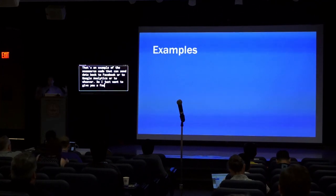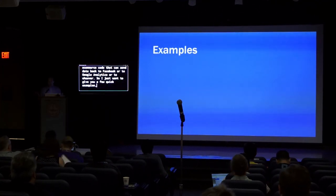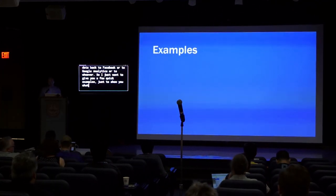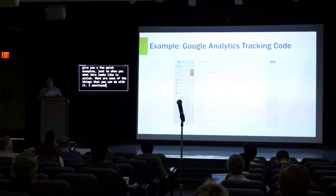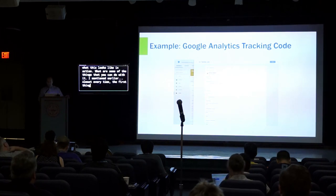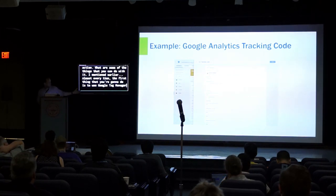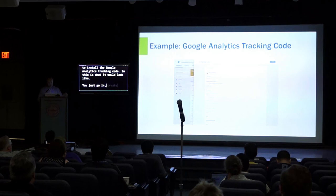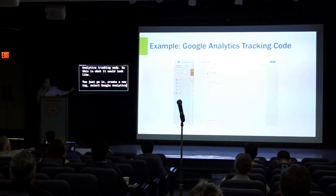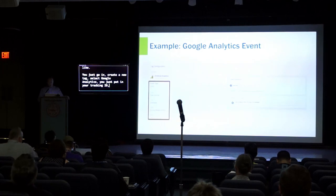I just want to give you a few quick examples to show you what this looks like in action. Almost every time, the first thing you're going to do is use Google Tag Manager to install the Google Analytics tracking code. This is what it would look like — you go in, create a new tag, select Google Analytics, put in your tracking ID, and you're done.